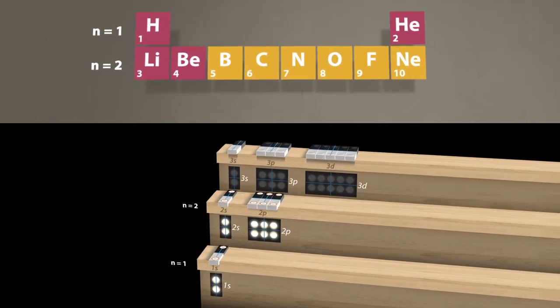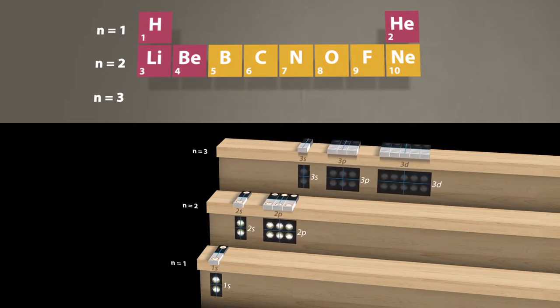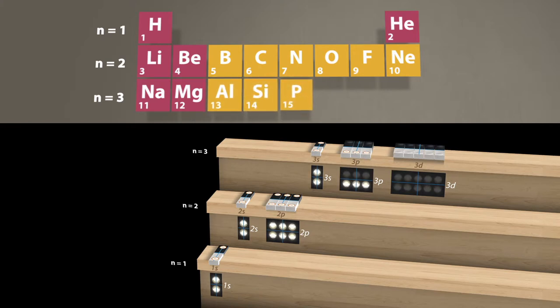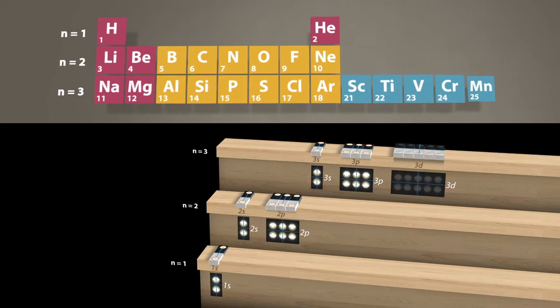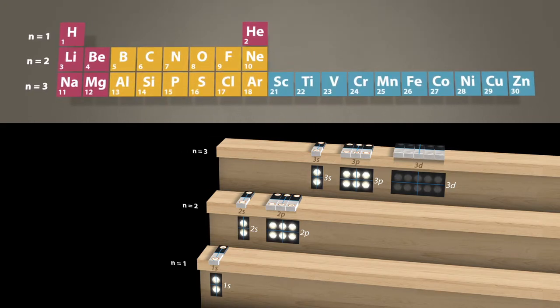Let us now fill our third shell with electrons following the same principle. For a better overview, let us pull the organ manuals apart a little. We have again 2 elements with 3s electrons, 6 elements with 3s and 3p electrons and another 10 elements with 3s, 3p and 3d electrons.